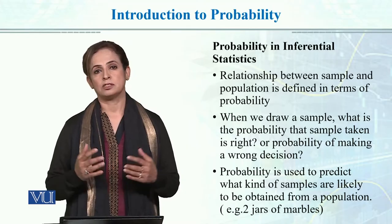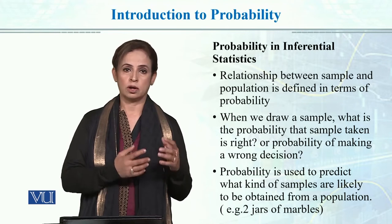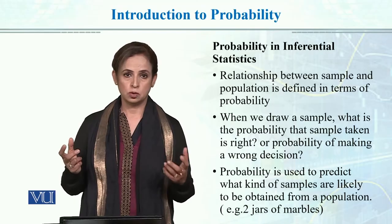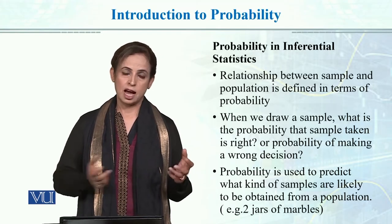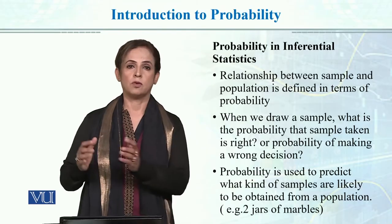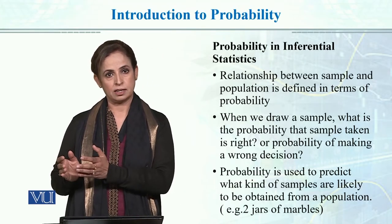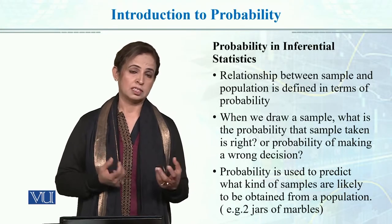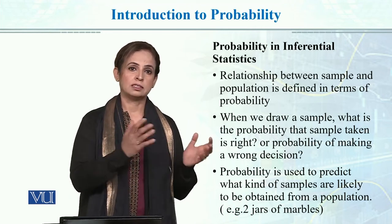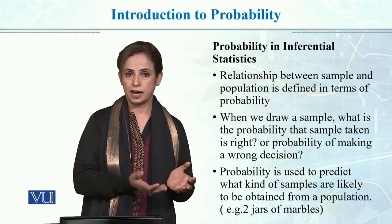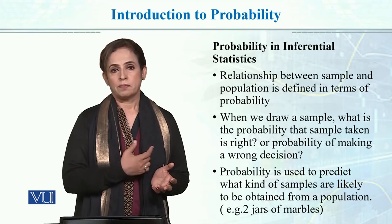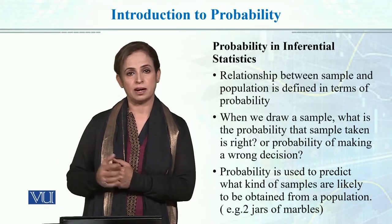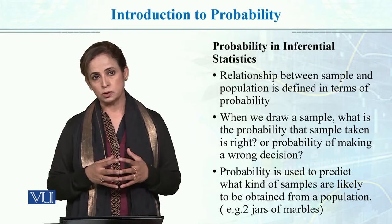Consider that you have two jars. In one jar, there are 10 white marbles and 90 black marbles. In another jar, there are 50 white marbles and 50 black marbles. You can relate and think about what kind of sample you would get. In jar 1, the probability of drawing a black marble is higher, and the probability of drawing a white marble is 10 by 100. This is directly linked to probability.